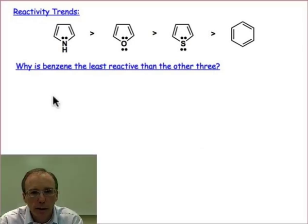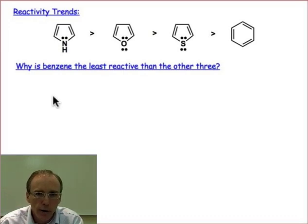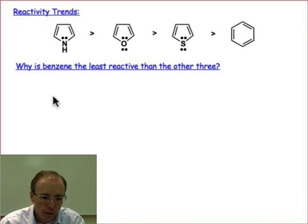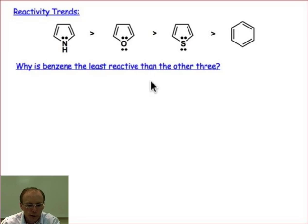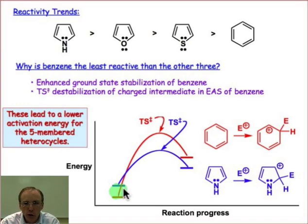Why the enhanced reactivity? We just explained the regioselectivity, but the enhanced reactivity has to do with the highest occupied molecular orbital energy level being elevated. The higher the energy of the HOMO, the more nucleophilic that pair of electrons is. A Hückel calculation confirms that the electrons in the HOMO of the thiophene ring — and other five-membered heteroaromatics — are higher in energy than those of benzene.